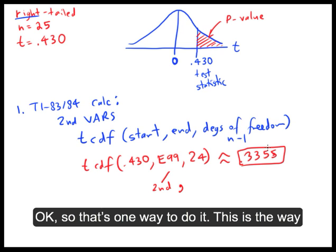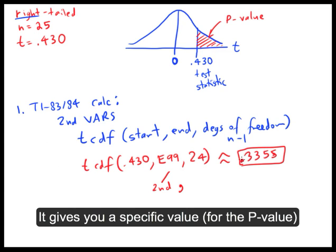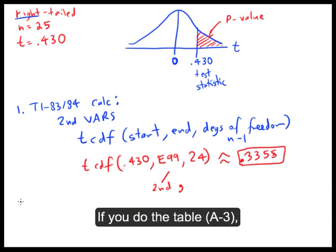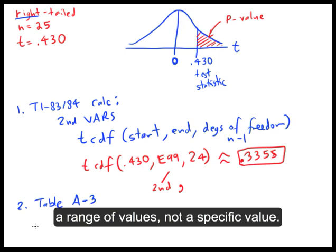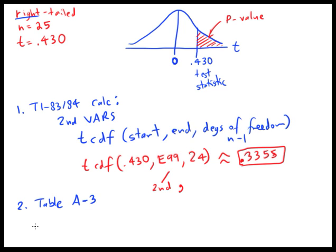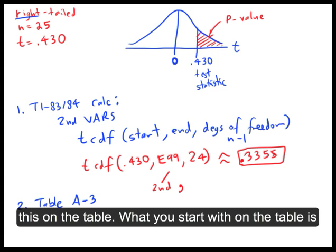And that's our p-value for this right-sided test. So that's one way to do it—if you have the graphing calculator, it gives you a specific value. If you do the table, table A3 is the t-value table. This is going to give you a range of values, not a specific value. Let's go through how to do this on the table.